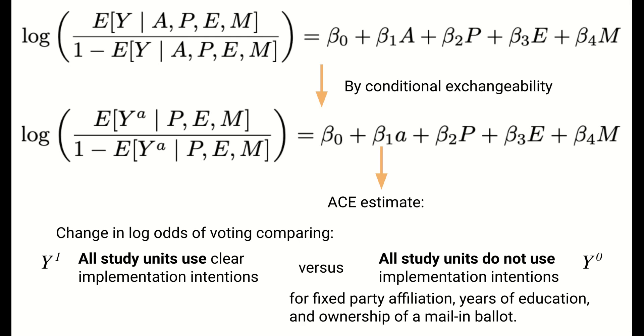The language of all study units used and all study units do not use is a reflection of the definition of the two potential outcomes, y1 and y0. The potential outcome under treatment, y1, is the voting outcome that would result if treatment were used, and the potential outcome under no treatment, y0, is the voting outcome that would result if no treatment were used.